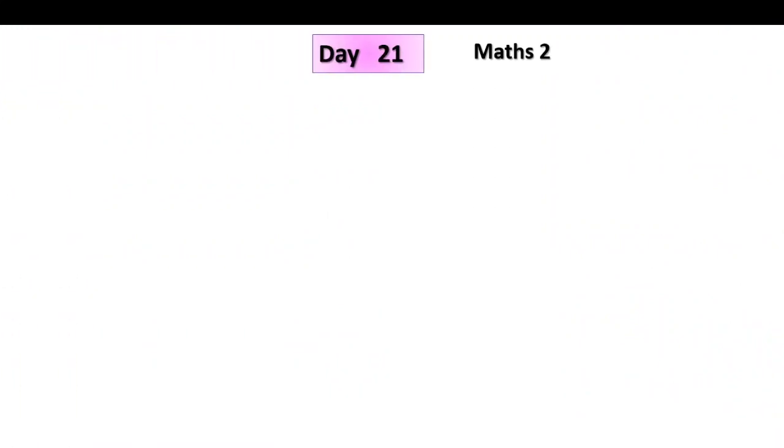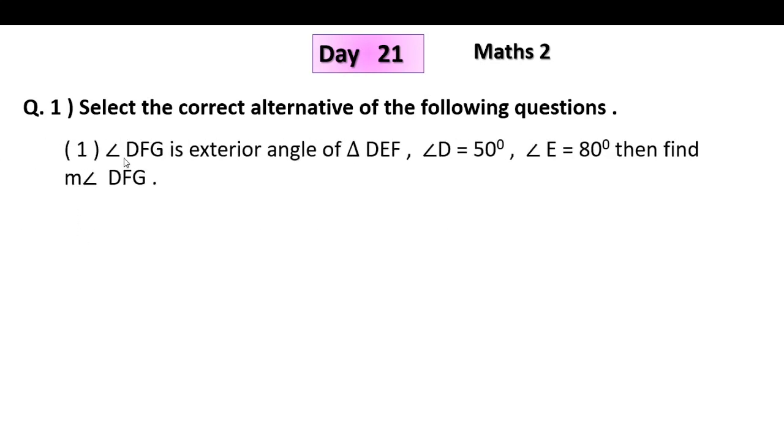Question 1: Select the correct alternative of the following questions. Angle DFG is exterior angle of triangle DEF. Angle D equal to 50 degree, Angle E equal to 80 degree. Then find measure of angle DFG. The options are 130 degree, 100 degree, 70 degree and 50 degree.